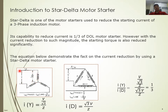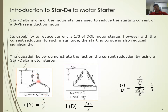For the current, the line current and the phase current are equal — only the voltage differs in star connection. So the line-to-line voltage is 415V and the phase voltage is 240V. By reducing the voltage at the phase, we can reduce the current flowing through this circuit during starting. The phase voltage is V over root 3, divided by the impedance Z of the phase, giving a certain current value.